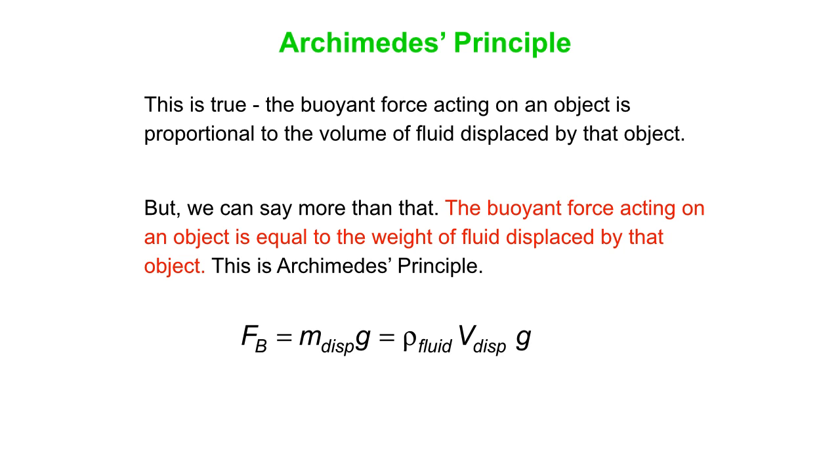And here that is expressed as an equation. The buoyant force is the mass of the displaced fluid times G. Or you can write that, as is often done, the density of the fluid times the volume of fluid displaced times G. And density here is symbolized by Greek letter rho. It looks a little bit like a P, but it's the Greek letter rho. And density is mass divided by volume.